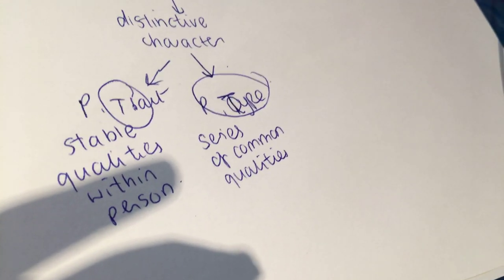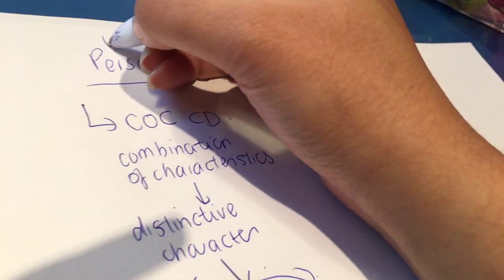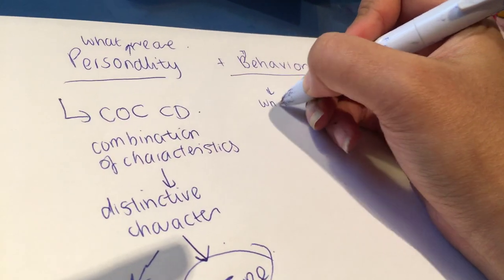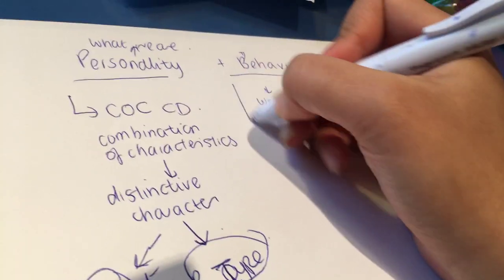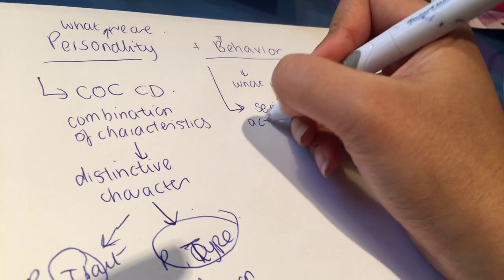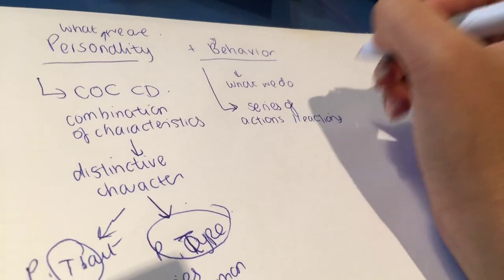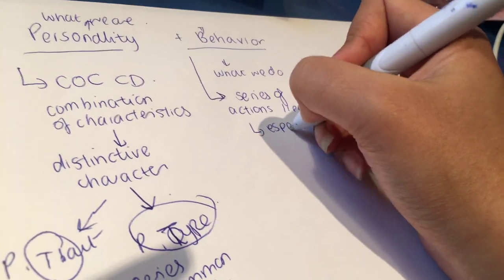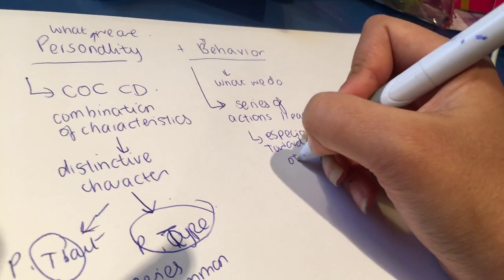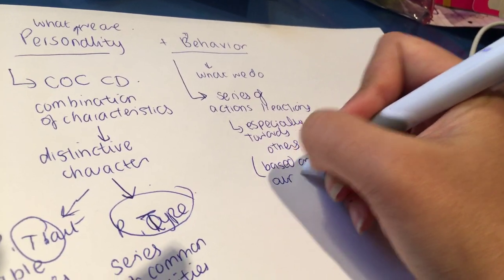Now, moving on from that, we have to be aware of what behavior is. So a quick way to differentiate personality from behavior: personality is what we are, and behavior is what we do. Simply speaking, behavior are a series of actions and reactions we have, or we execute, especially towards others.